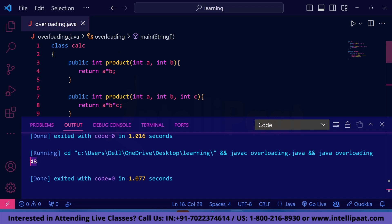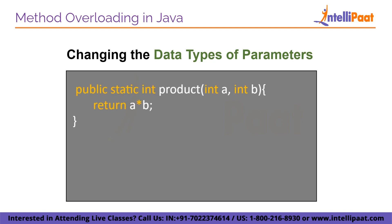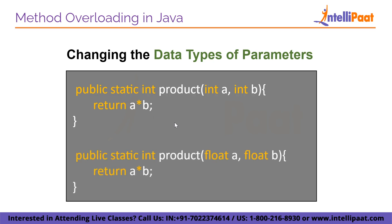Now let's look at the second type of method overloading — changing the data types of parameters. Suppose you want to find the product of two integers a and b; we declare method 'product' passing two integers. Now if you want the product of two floats a and b, you don't need a new method name. Because of method overloading, we can use the same method 'product', pass two floats as parameters, and return the result.